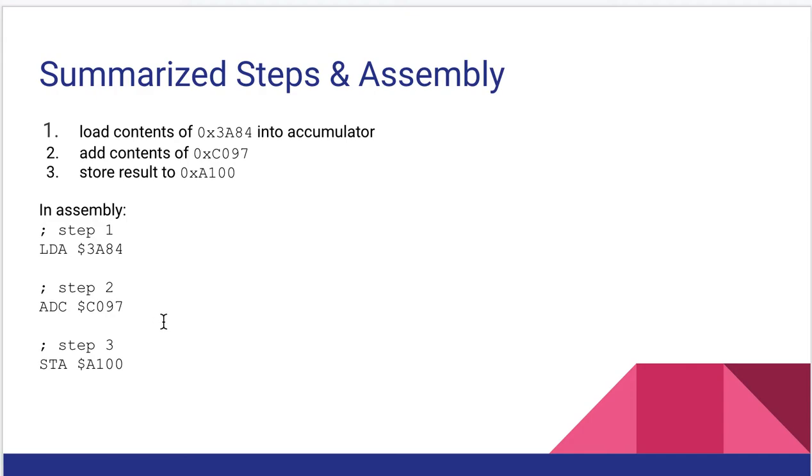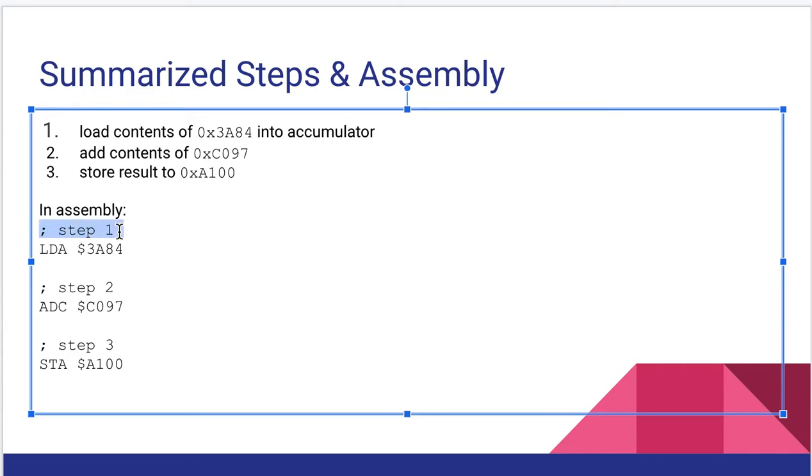So let's summarize those steps and look at how the assembly will fall out. We load contents of 3A84 into the accumulator, step one. Step two, we add the contents of C097 and the result will also be placed into the accumulator. Then we store the result. In other words, take what is in the accumulator and store it back to A100. So in assembly, step one, load into the accumulator from address 3A84. So that's what LDA means. Step two, add with a carry ADC the contents of C097, and again that will place the result into the accumulator. Step three, store the results to A100. So we do that with an STA, aka store accumulator to A100. So a three-step process to add two memory contents together.